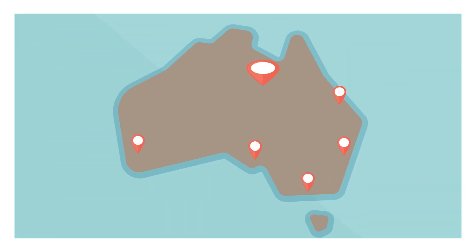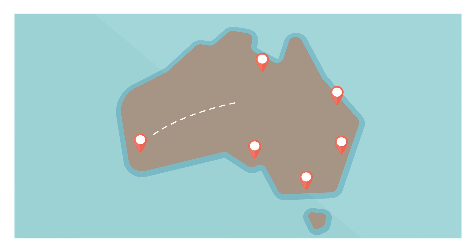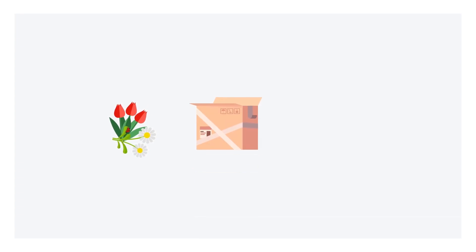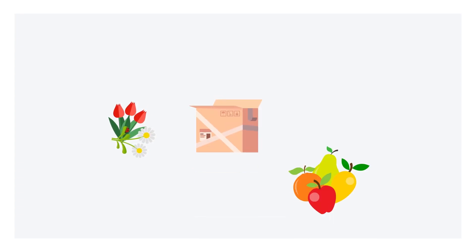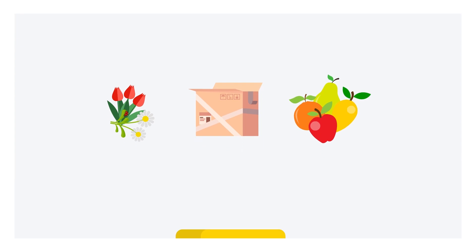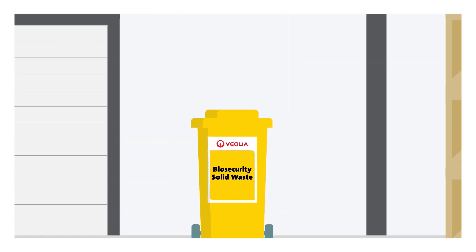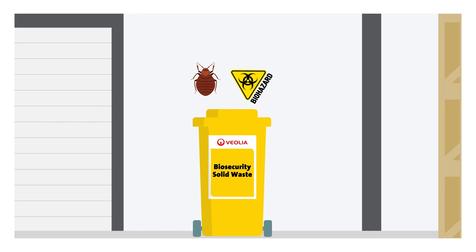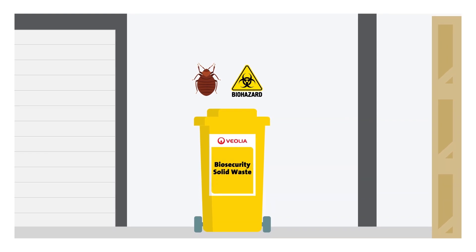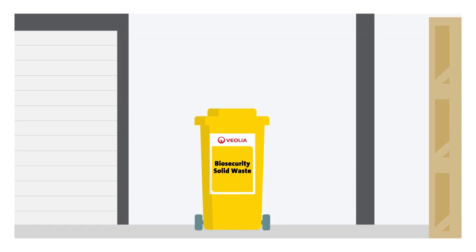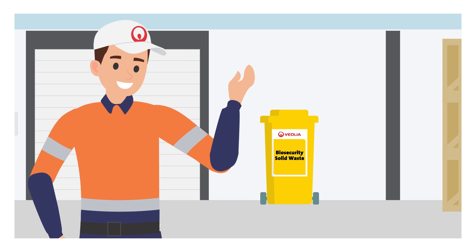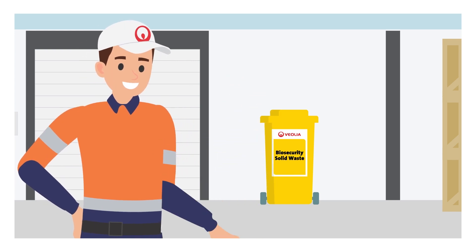Biosecurity waste can sometimes include waste transported between Australian states and territories. Any waste can be classified as biosecurity waste, depending on the state or country of origin. All waste can contain pests or diseases harmful to Australia's agricultural industry, and is therefore tightly monitored and controlled by both federal and state regulatory bodies.